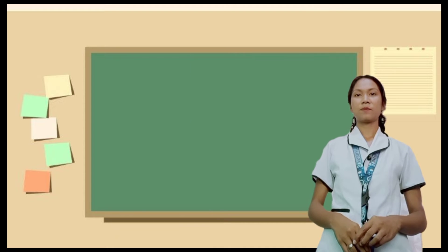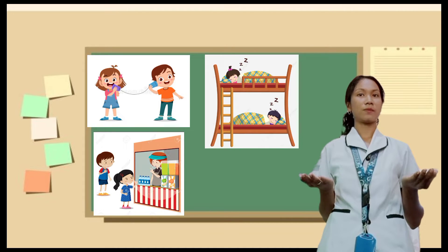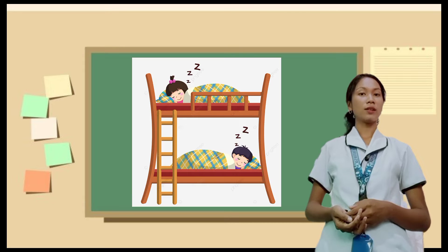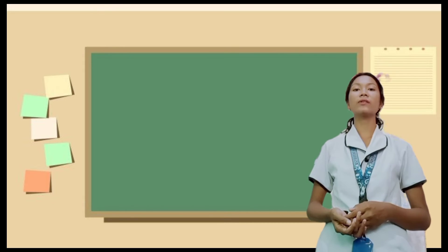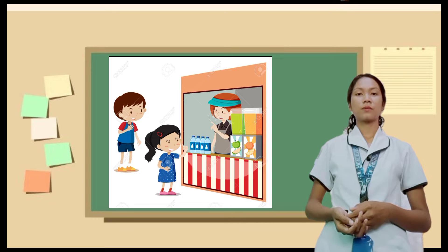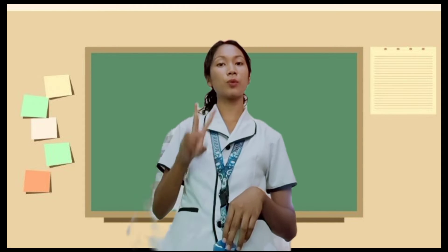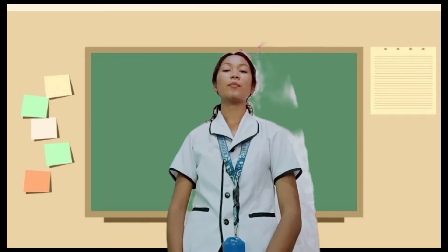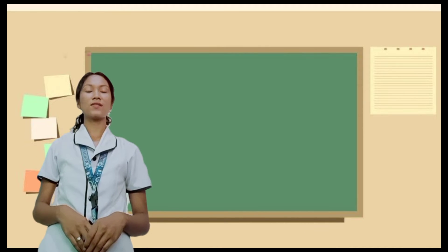Let me show you some pictures. These are the three pictures — what have you noticed? Okay, the second picture? And how about the last picture? All right. Now let us connect your answers to our discussion for today. The first picture shows two persons talking using two cans with a string. The second picture shows two persons who are sleeping, and the third one shows two or three children who are buying. What do you think is the instrument they use to communicate?